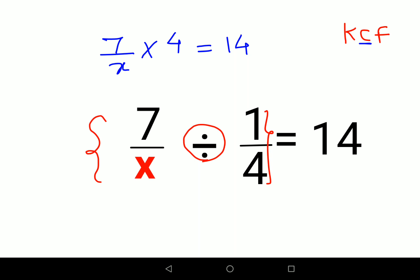So now what you will get is 7 into 4 is 28 upon x equals 14.